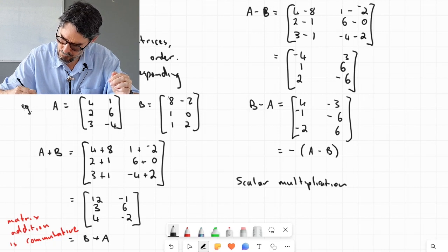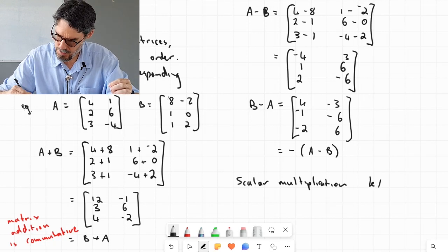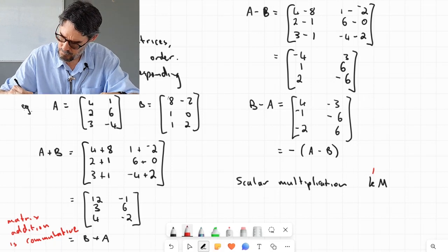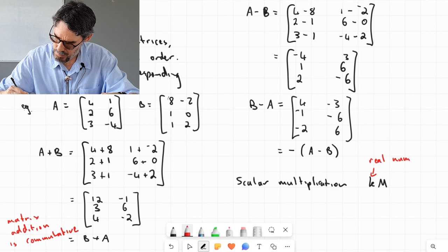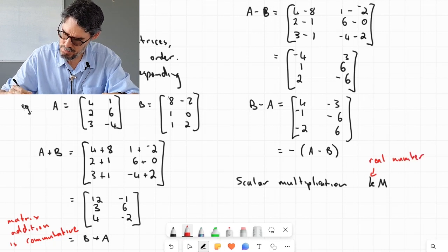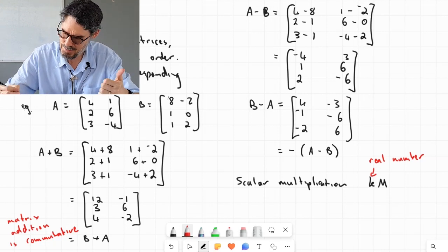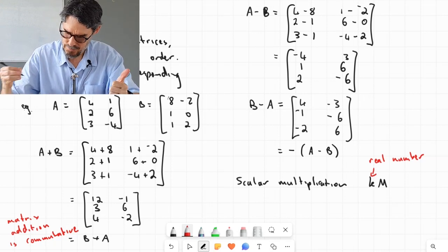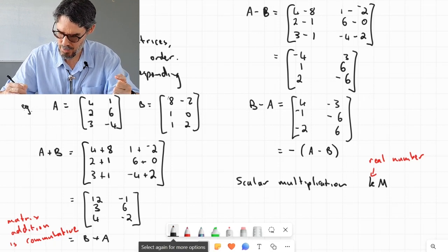What do I mean by that? If I go K times M, where K is a real number, not a matrix—notice it's a small letter, it's a lowercase letter, meaning it's a scalar. That's what the word scalar here means: not a matrix. So all I do is I multiply every element by that number.